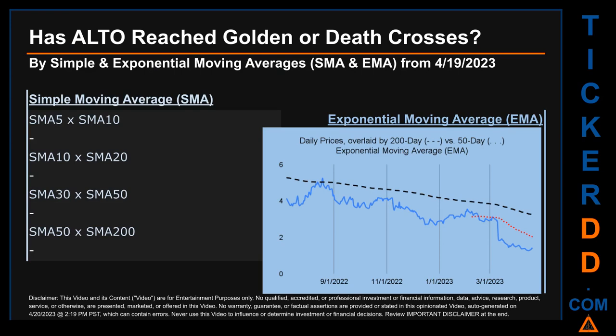Now back to the video. Has ALTO's price reached golden or death crosses? Golden cross and death cross are basic signals that compare average prices across two specified trade-day ranges — a short-term versus a long-term range, for example five-day versus ten trade days. A golden cross is a bullish signal; it appears when a ticker's short-term moving average crosses above its long-term average. Vice versa, a death cross is a bearish signal when the short-term crosses below its long-term moving average. We decided to look at both simple moving average (SMA) and exponential moving average (EMA), the latter of which gives more weighting to recent prices.